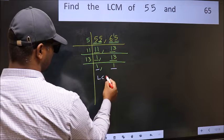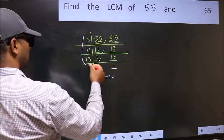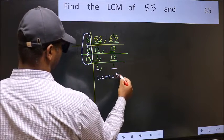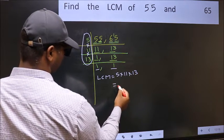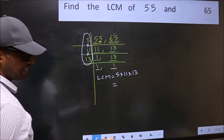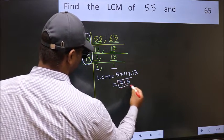So our LCM is the product of these numbers: 5 into 11 into 13. When we multiply these numbers, we get 715 as our LCM.